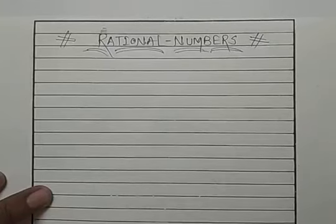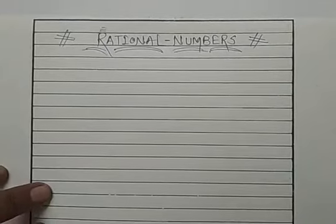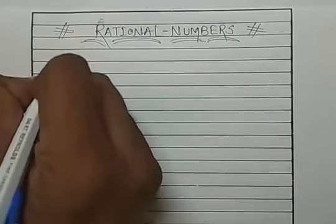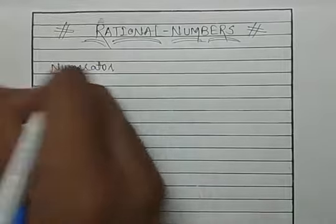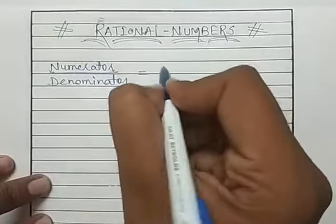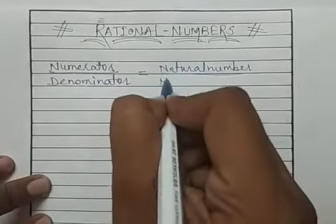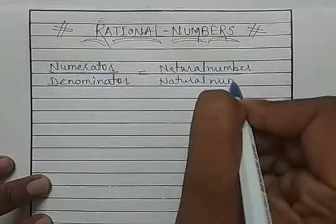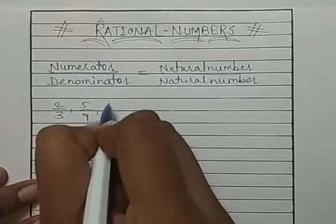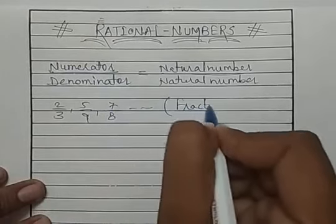Students, now we are going to start a new chapter — Rational Numbers. We have studied fractions earlier. In fractions, any number is in the form of numerator upon denominator, where the numerator and denominator are natural numbers — meaning starting with 1. For example, 2 by 3, 5 by 9, 7 by 8 and so on. These all are fractions.